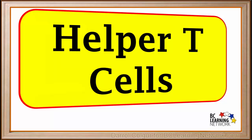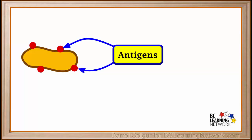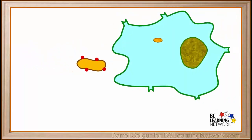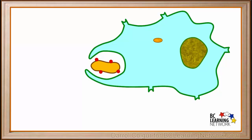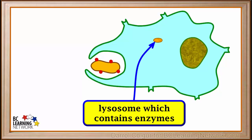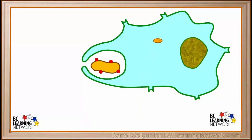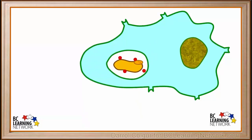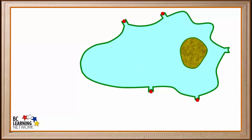We'll start looking at helper T cells and how they work. Let's consider a bacterium. It has antigens on its surface, which we'll show as little red circles. We see that a white blood cell is engulfing this bacterium. White blood cells like this one have organelles called lysosomes in them. These are filled with enzymes that can break down ingested materials. As the bacterium is broken down, its antigens are carried toward the surface of the white blood cell. When they reach the surface, they are displayed or presented at the ends of protein structures already present on the membrane of the cell.